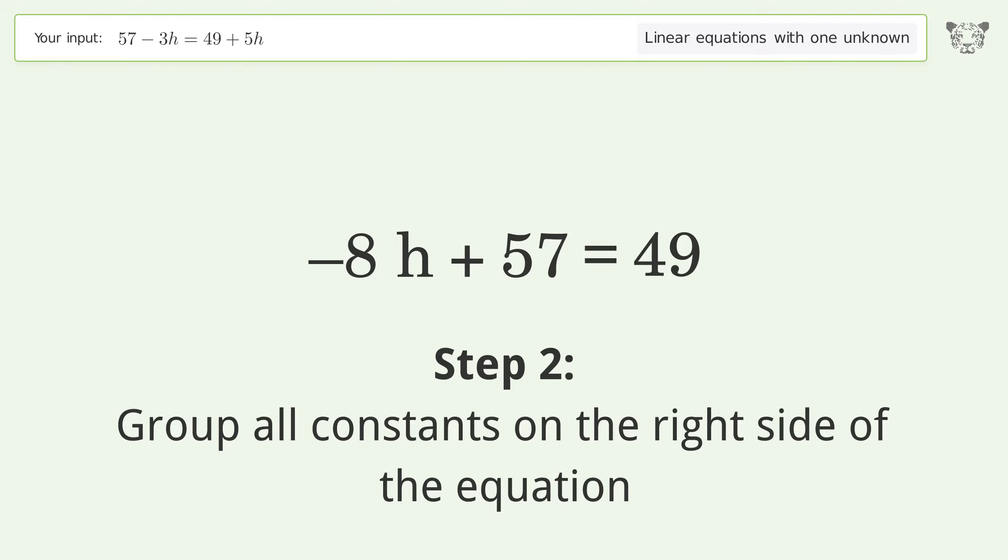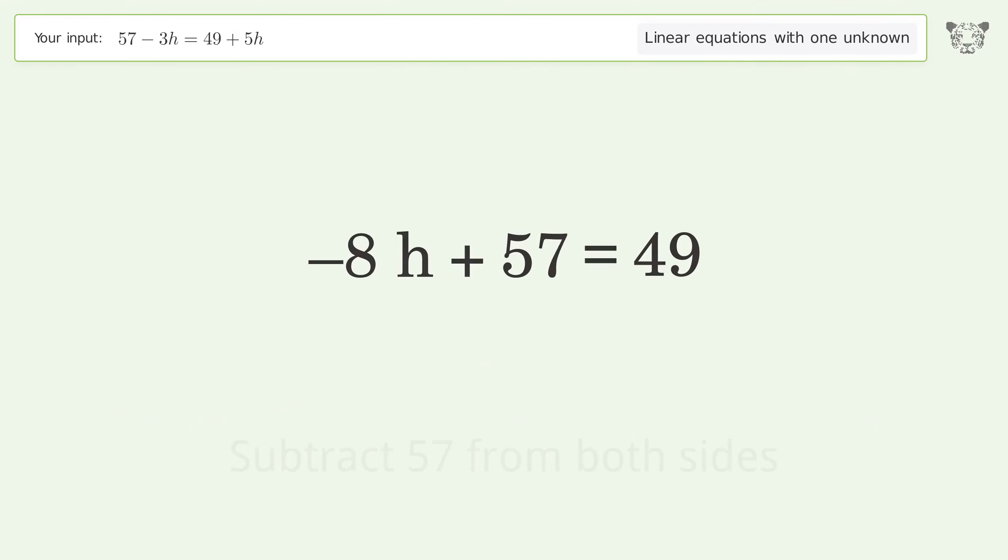Group all constants on the right side of the equation. Subtract 57 from both sides. Simplify the arithmetic.